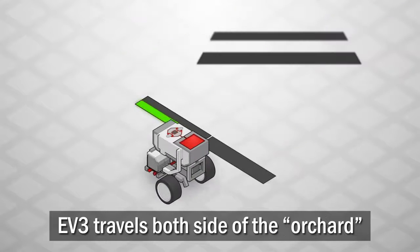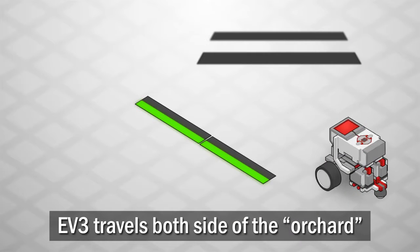In this challenge, your robot will navigate a simulated orchard, making sure to visit both sides of each tree along the way.